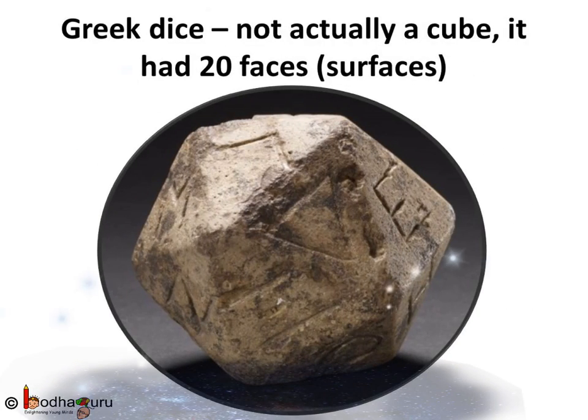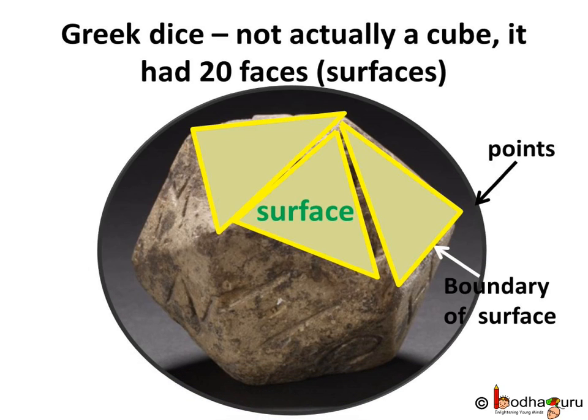So what did they think about shapes and solids? Here we see a Greek dice having 20 faces. A solid has shape, size, position and can be moved from one place to another. And the boundaries of the surfaces are either curves or straight lines.